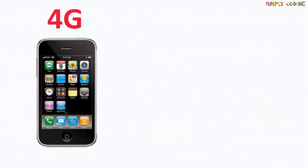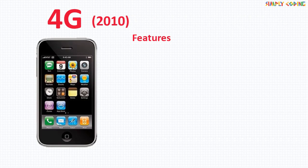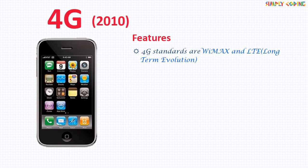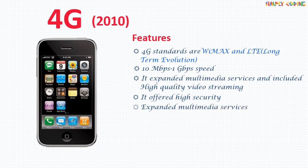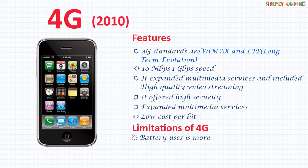4G was introduced in 2010. The most important 4G standards are WiMAX and LTE — Long Term Evolution. It was capable of providing speeds from 10 Mbps to 1 Gbps. It expanded multimedia services and included high quality video streaming and high security. The limitations of 4G are that it uses more battery, is hard to implement, and requires complicated hardware.